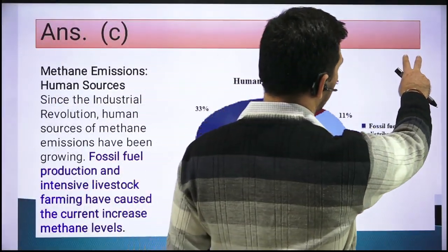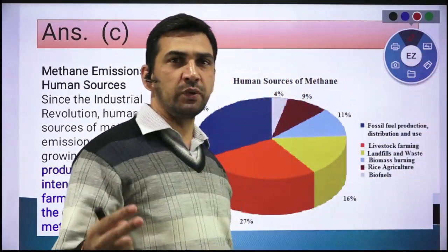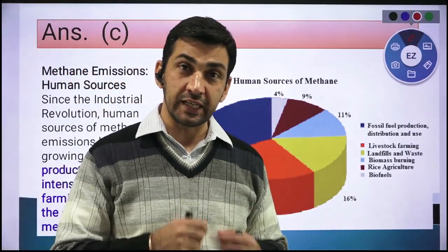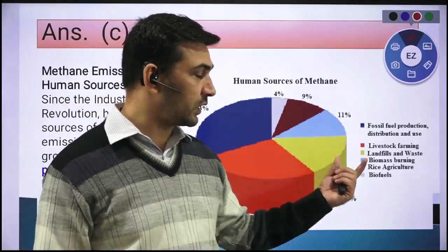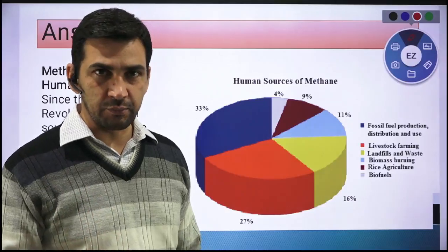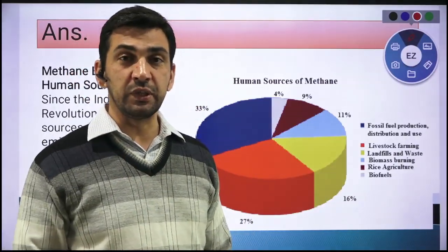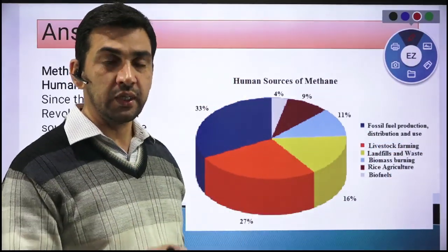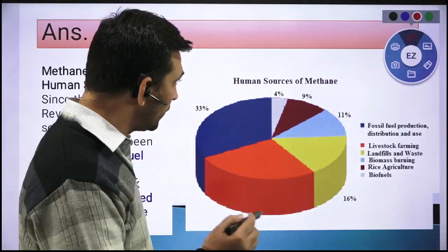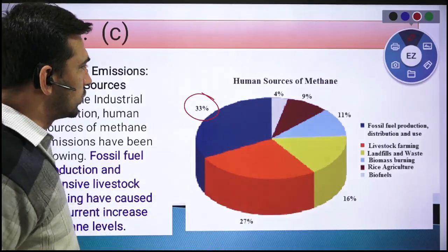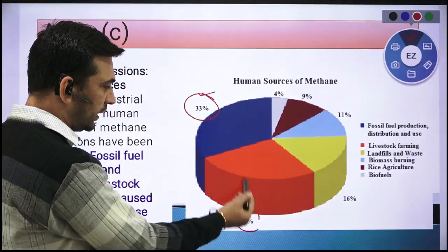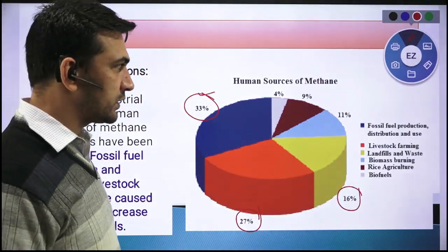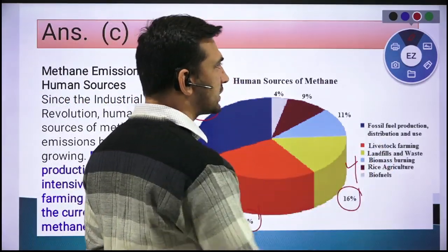The major sources of methane release are fossil fuels — including burning, extraction, and distribution — followed by livestock farming, and then landfills and waste decomposition. Fossil fuels are the largest source of methane, followed by livestock farming, and then landfill or waste decomposition. Other sources also exist but these are the main ones.